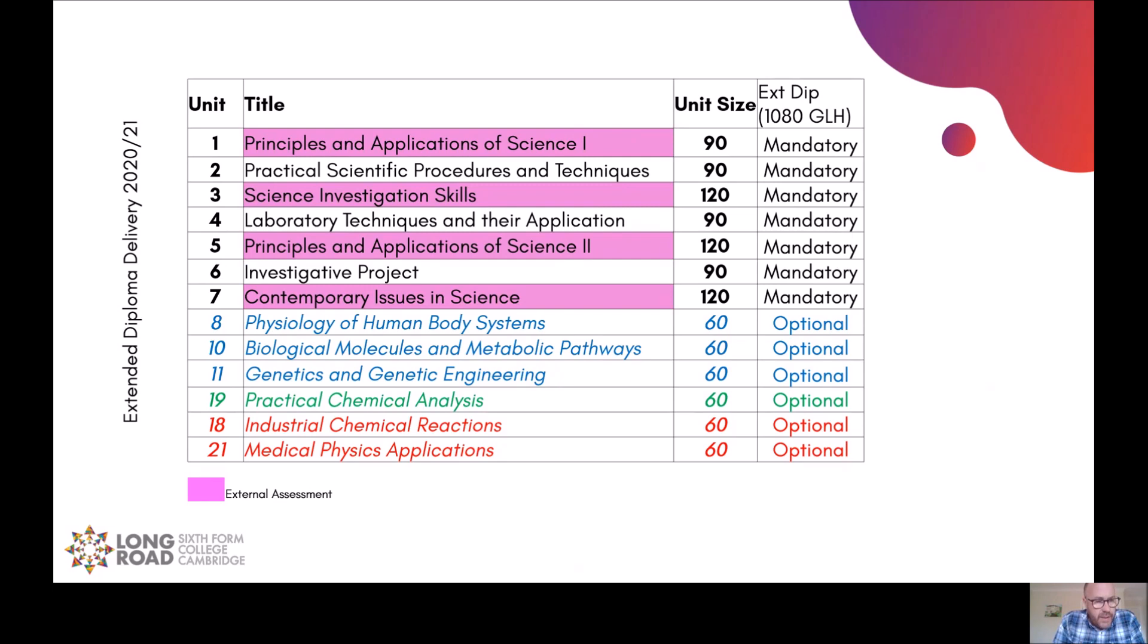Unit 18 is industrial chemical reactions. This will look at thermodynamics from a chemistry point of view. It looks at rates of reactions. Equilibrium with a particular focus on the Haber process. The last unit to be covered is medical physics. This is really good, particularly if you want to have a career working in a hospital as a radiographer. This unit looks at ionising, non-ionising radiation techniques and the health and safety behind them.